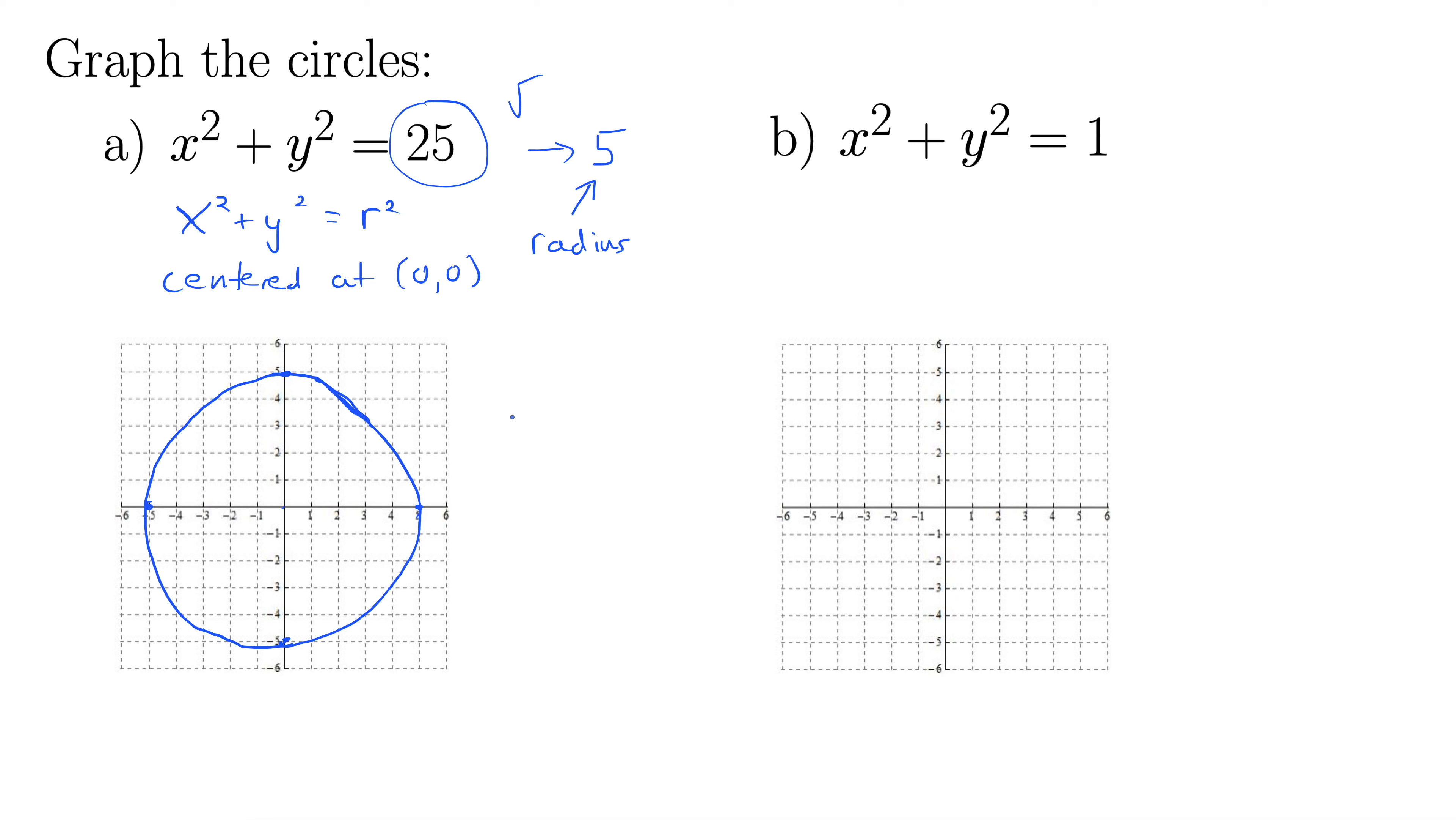Right, so for b, x squared plus y squared equals 1. So we take the square root of the 1 to get the radius. It's still 1. So our radius is 1, so it's a very small circle. That's okay.